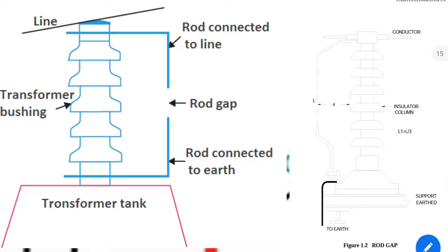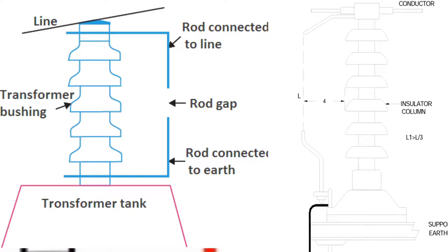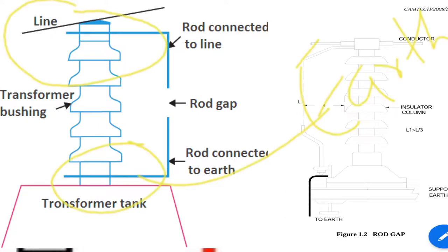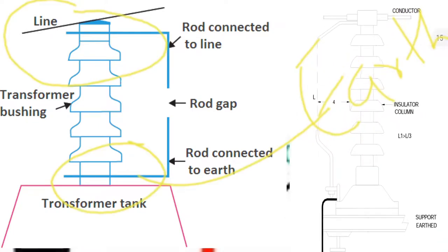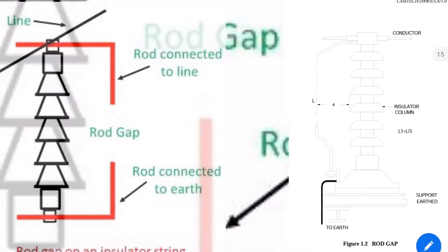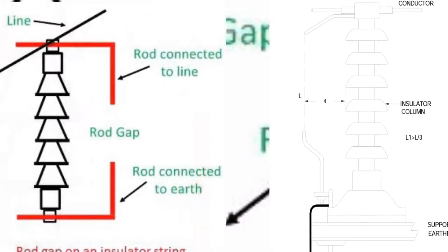Now see the picture of the rod type lightning arrestor, in which the rod is connected from earth to the conductor through an air gap arrestor.